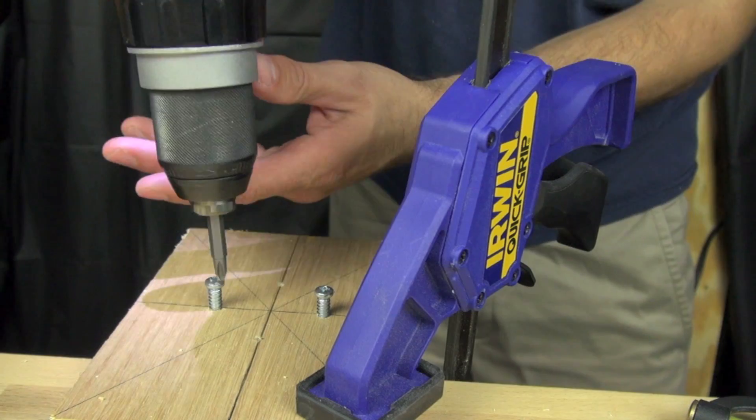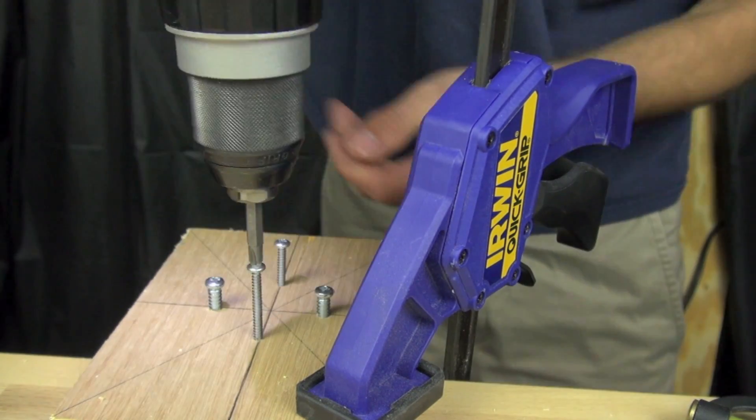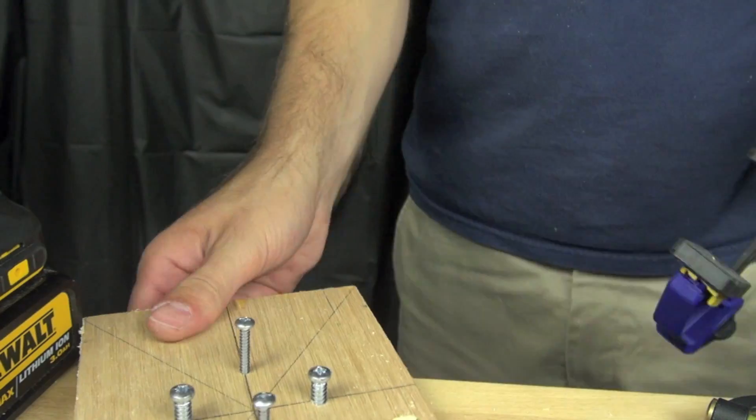These actually came from an IKEA bed. And then these are just some scrap screws that we had laying around. You can use any screws or nails.